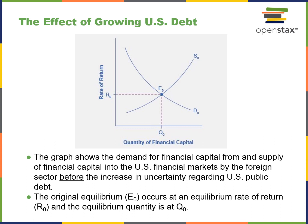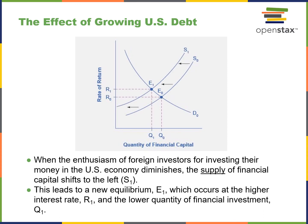This slide shows the effect of growing U.S. debt — specifically, the demand for financial capital and the supply of capital in U.S. financial markets before and after an increase in uncertainty regarding U.S. public debt. The equilibrium point is our starting point. When the enthusiasm of foreign investors for investing in the U.S. economy diminishes, the supply of financial capital shifts to the left — the supply curve shifts from S0 to S1. At the new equilibrium, there's less money being demanded because the rate of return is higher.